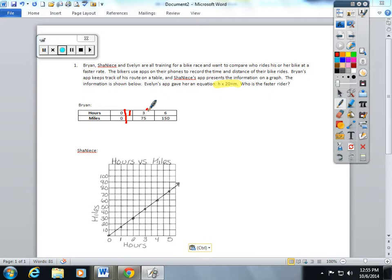Three divided by three gets you down to one. So now we're going to have to do 75 divided by three, because whatever you do to the top of your ratio table, you must do to the bottom. In one hour, Brian can ride 25 miles. Okay, that was pretty easy.